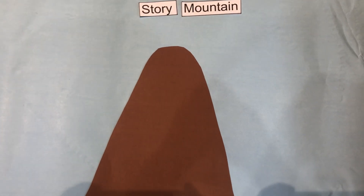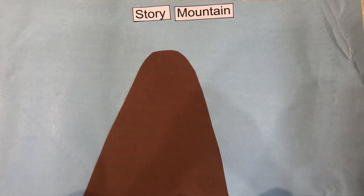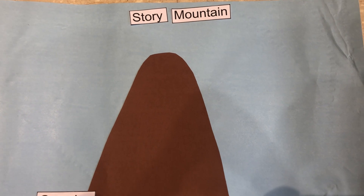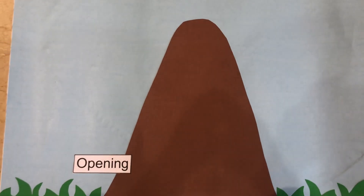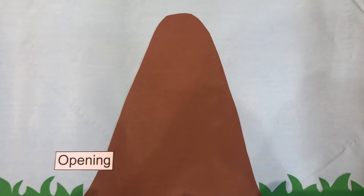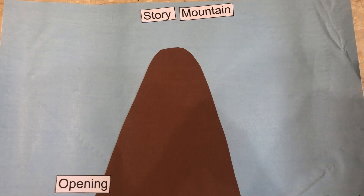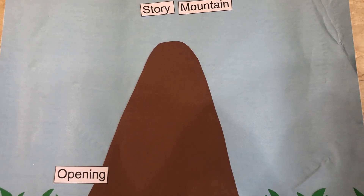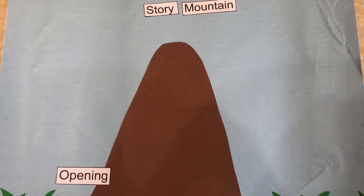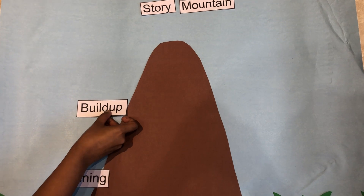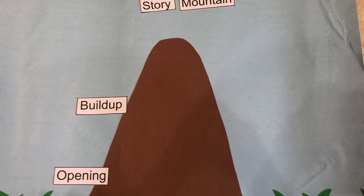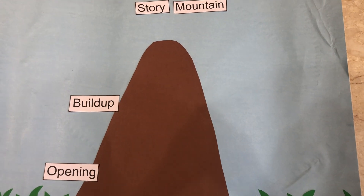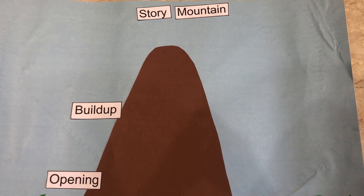The basic pattern is: each story has an opening where the reader is introduced to the character and the setting, then there is a build-up where some events occur and the characters begin to do something.